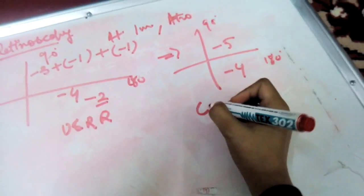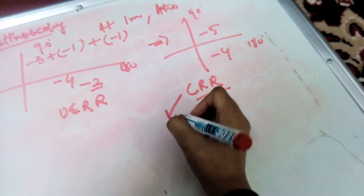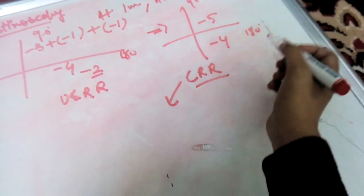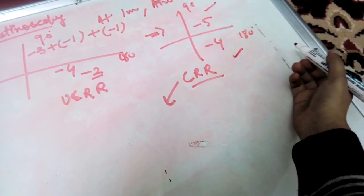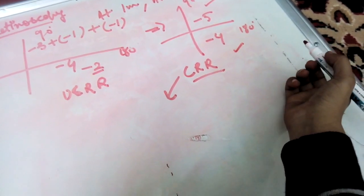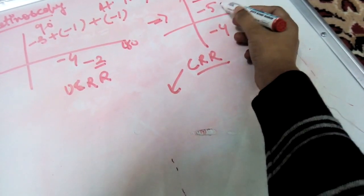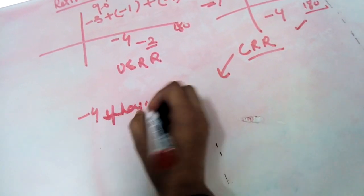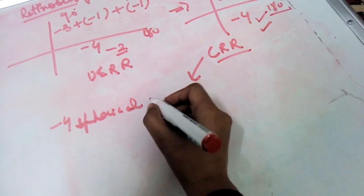This gives us the corrected retinoscopy reading: minus five at 90 degrees and minus four at 180 degrees. Now we need to prescribe the power for the patient. A spherical lens has power in both axes — 90 degrees and 180 degrees. A cylindrical lens has power only in one axis. So we can prescribe minus four spherical, which covers minus four in both axes.